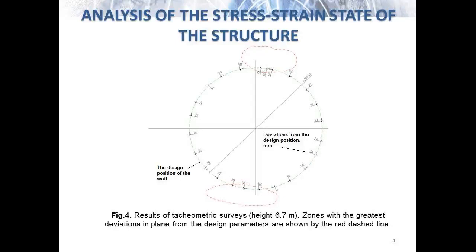It has been found that the planned high-altitude position of the tank wall exceeds the maximum permissible deviations from the vertical axis specified in the accompanying documents state-standard specification. The results of the tachymetric surveys are given in Figure Number 4.